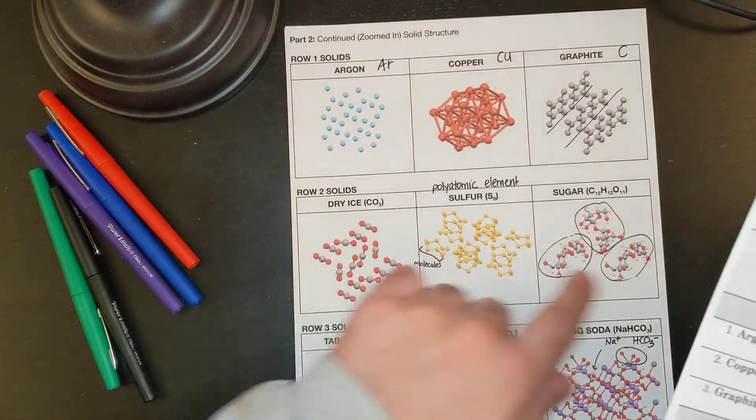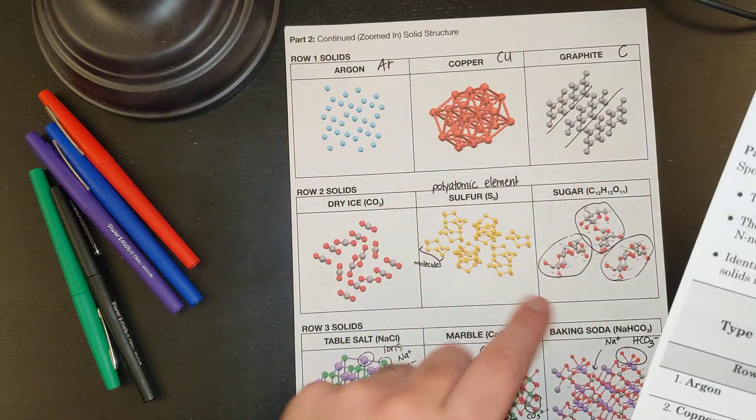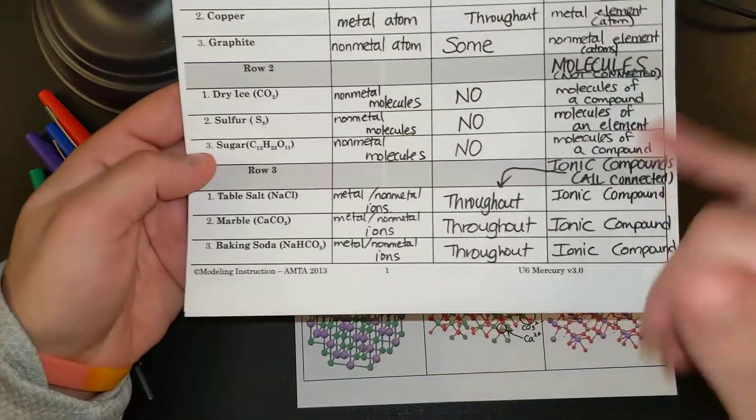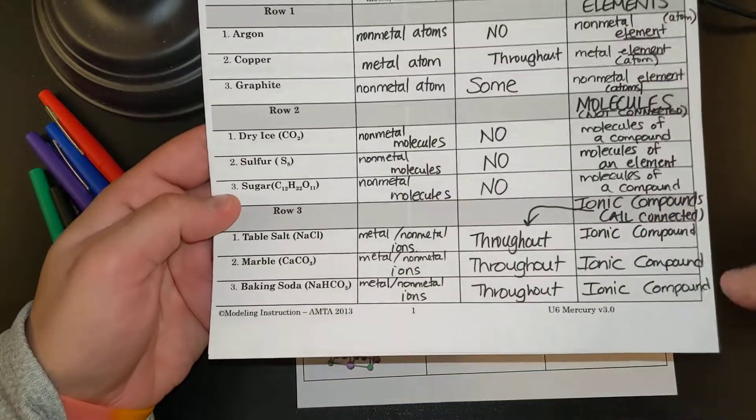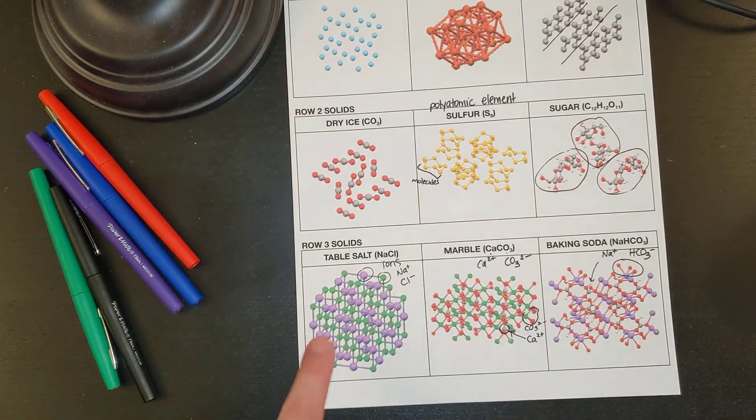Then we had our second row of solids. These are mostly molecules, and they were never connected. So molecules that are never connected. And then finally, our last generalization were ionic compounds, and they were always connected. So we had ionic compounds that were always connected.